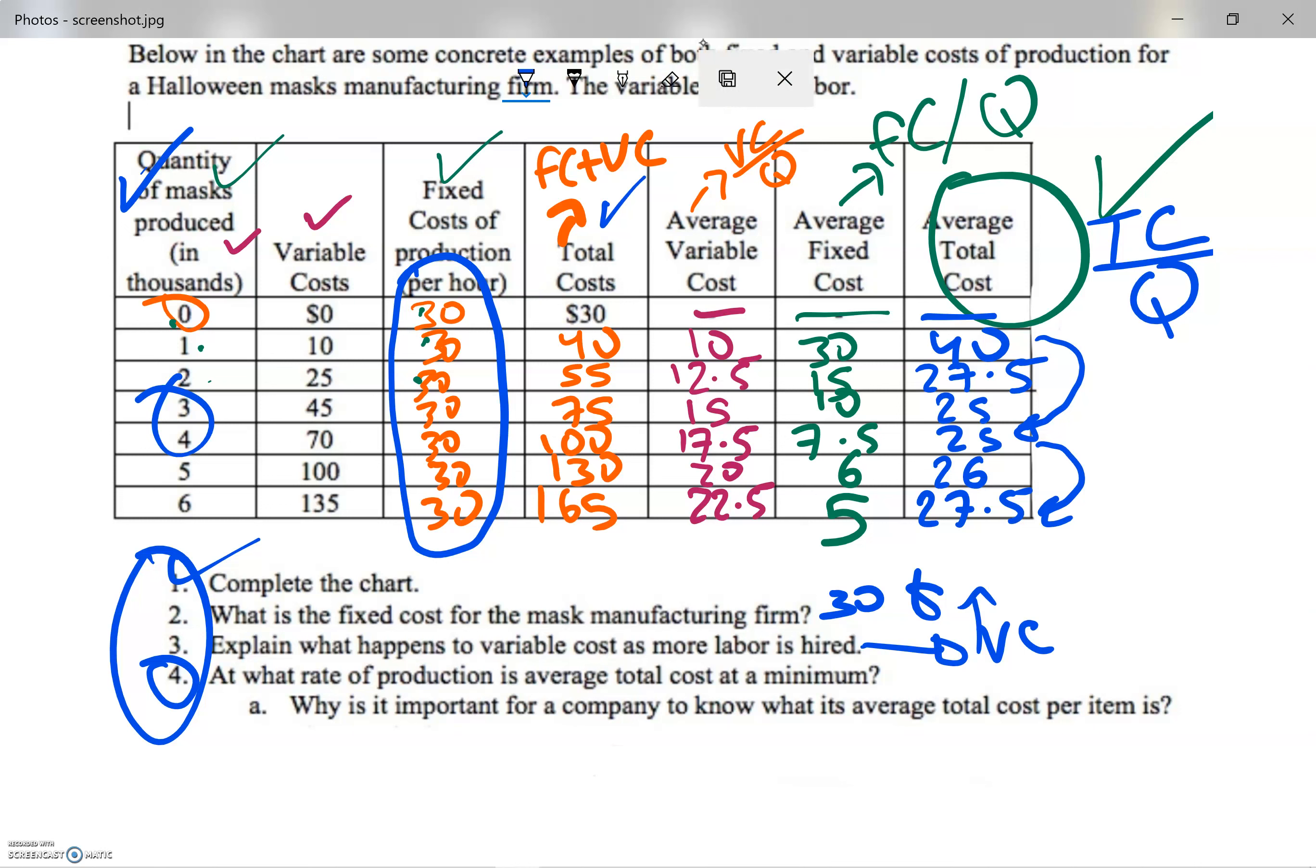And why is it important for a company to know what its average total cost per item is? Because, as a firm, my major aim is always to minimize my cost or maximize my profits. So right here, I know it would be better for me to produce three or four units of masks in thousands - so $3,000 or $4,000.